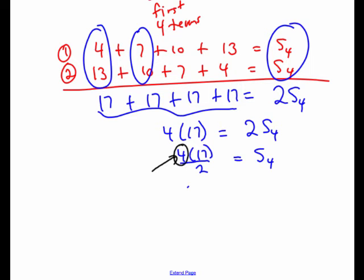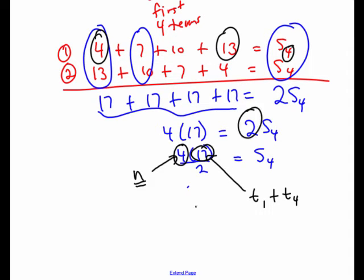But let's just note where some of these numbers are coming from. The 4 is the number of terms. The 17, a way to get the 17, we can think of that as taking the first and the last terms of the sequence, term 1 plus, in this case, term 4. And the 2 comes from the fact that we had two equations and so the 2 is just a 2.